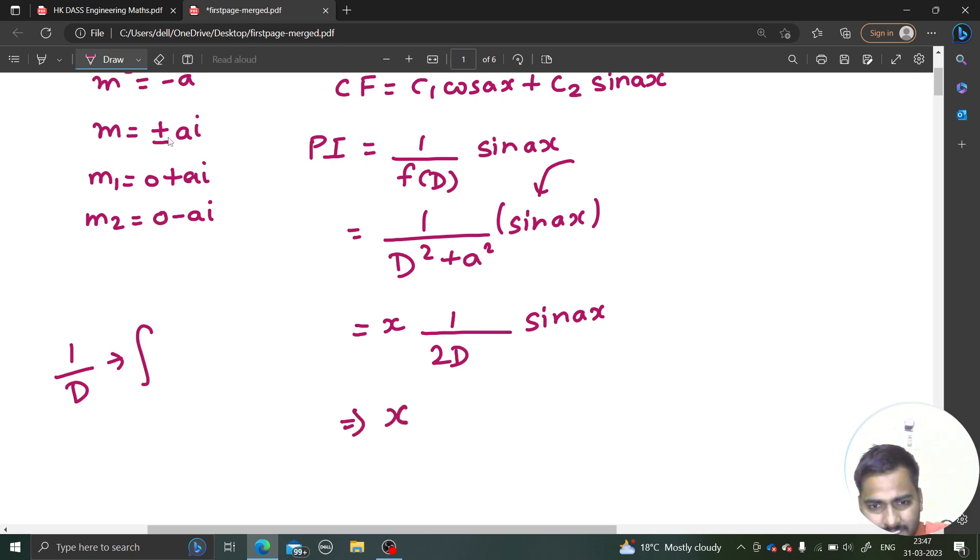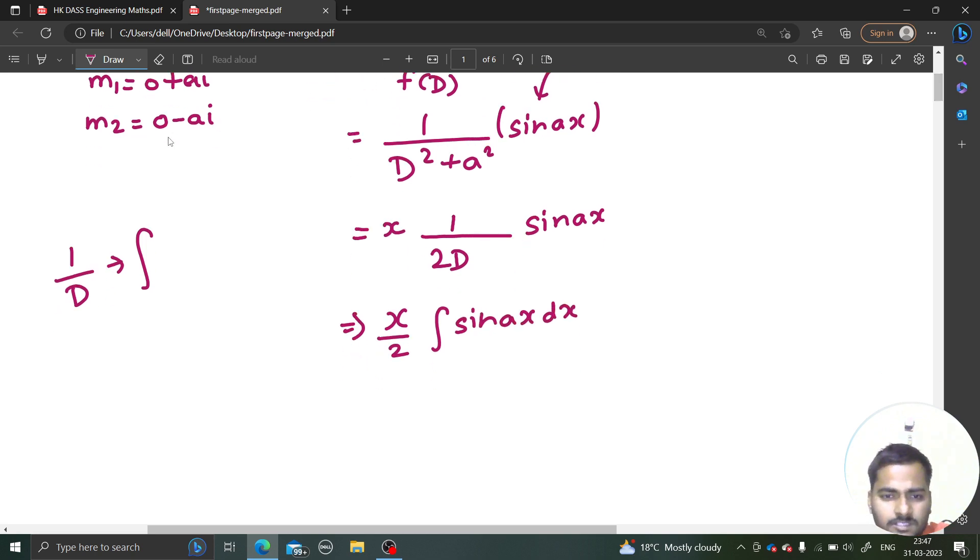So this is x by 2 and integral of sin ax dx. So integral of sin is negative of cos. Negative cos ax and also you have to divide by the derivative or simply the coefficient of x which is a. So minus x by 2a cos ax.